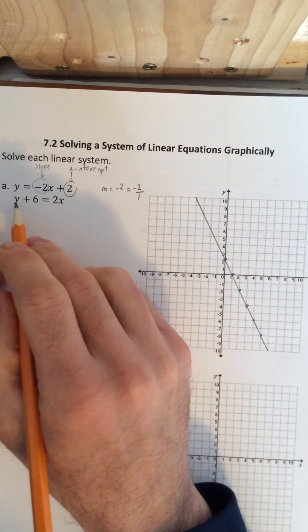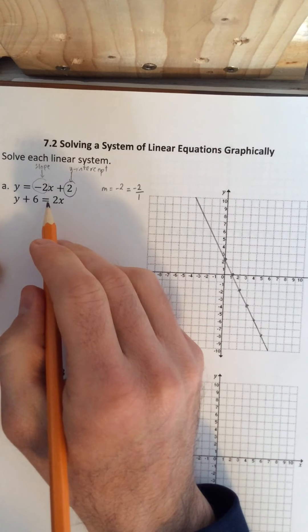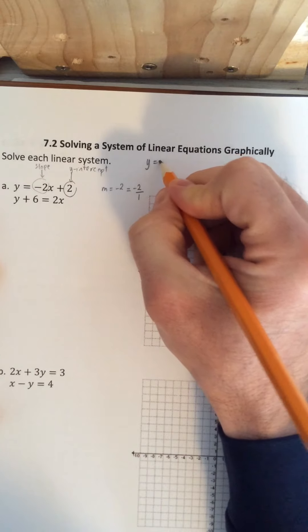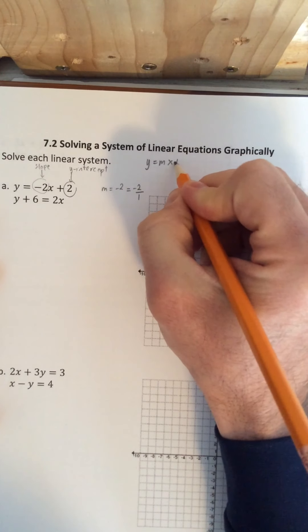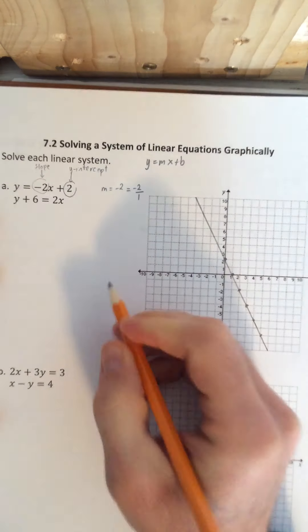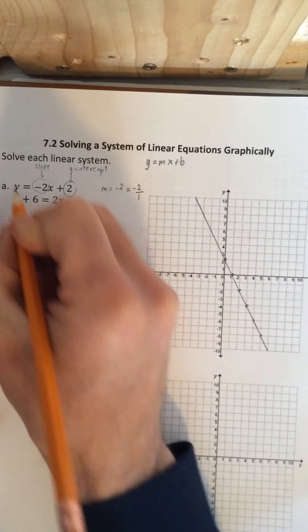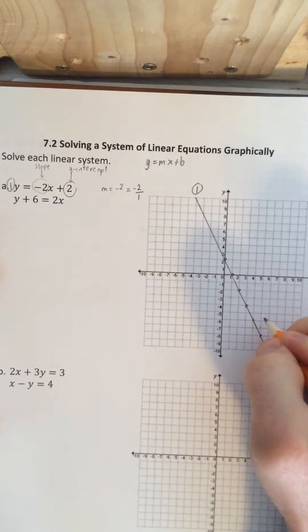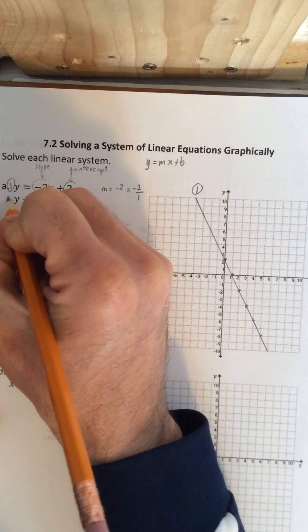This second line is not rearranged in y equals mx plus b form. So we are going to change all the equations to look like this in slope intercept form. So to rearrange this, so we've graphed equation 1 and I'll write 1 as our first line here.